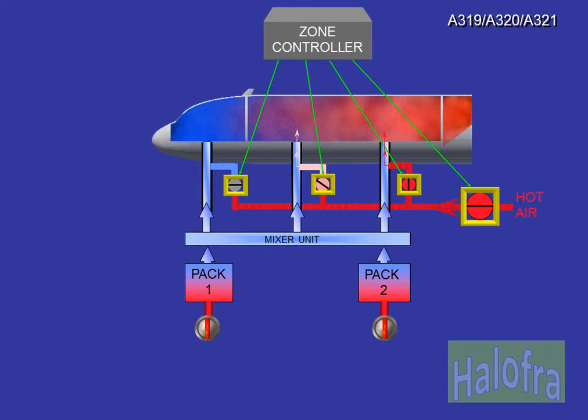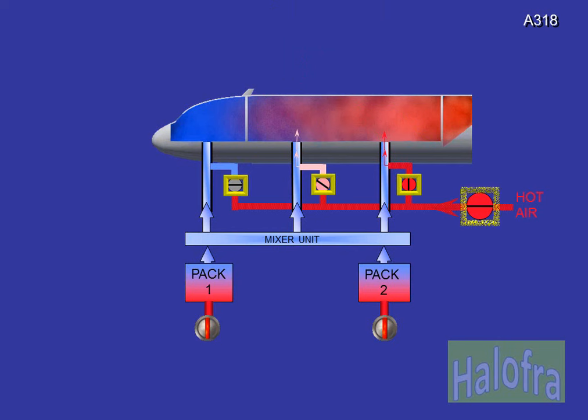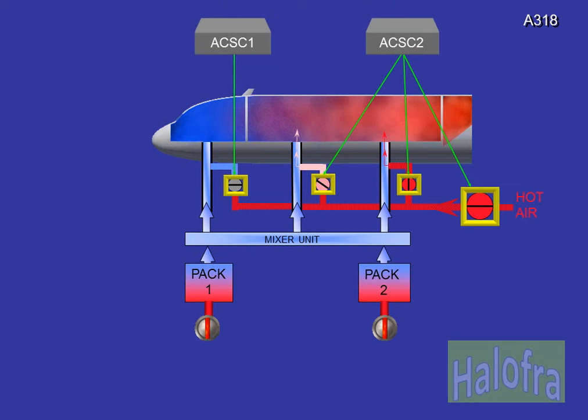The trim air valves and the hot air valves are controlled by the zone controller. In the case of any duct overheat, the hot air valve and the trim air valves will automatically close to isolate the system. The system can be reset when the overheat disappears. The flight deck trim air valve is controlled by ACSC1. The forward and aft cabin trim air valves and TAPRV are controlled by ACSC2. In the case of any duct overheat, the TAPRV and the trim air valves will automatically close to isolate the system. The system can be reset when the overheat disappears.